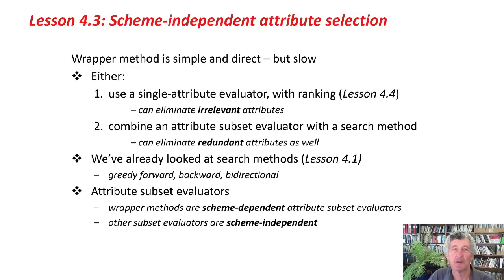A second alternative is to combine an attribute subset evaluator with a search method. That allows us to eliminate redundant attributes as well as irrelevant ones, so it's potentially much more powerful. We've already looked at search methods in Lesson 4.1, and we've looked at one kind of attribute subset evaluator, the wrapper method. That is a scheme-dependent way of evaluating an attribute subset. Now we're going to look at scheme-independent ways of evaluating attribute subsets.